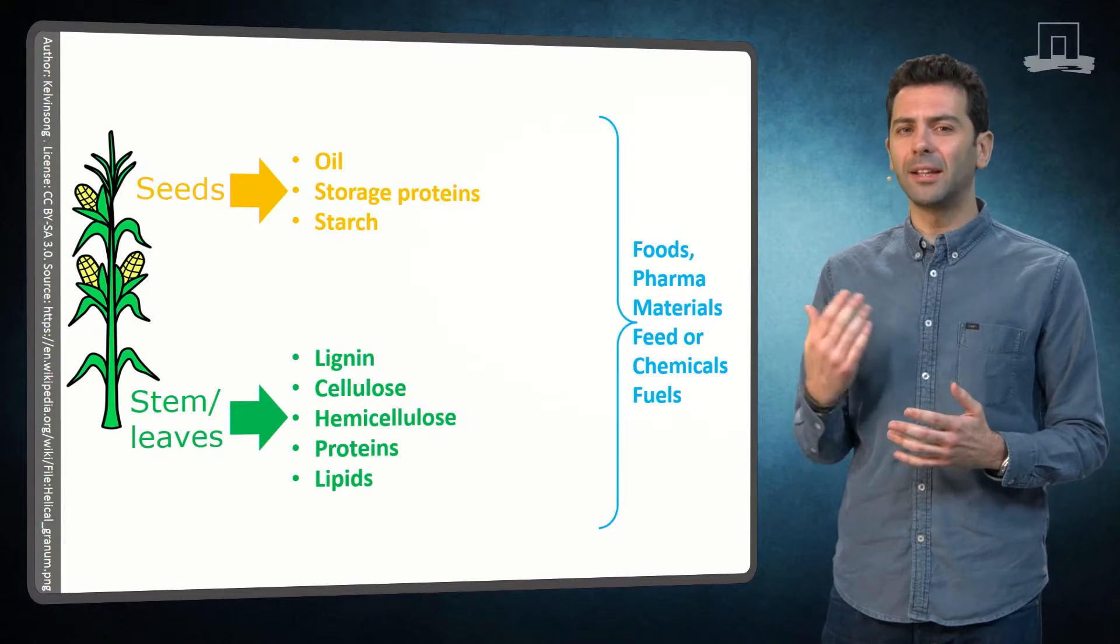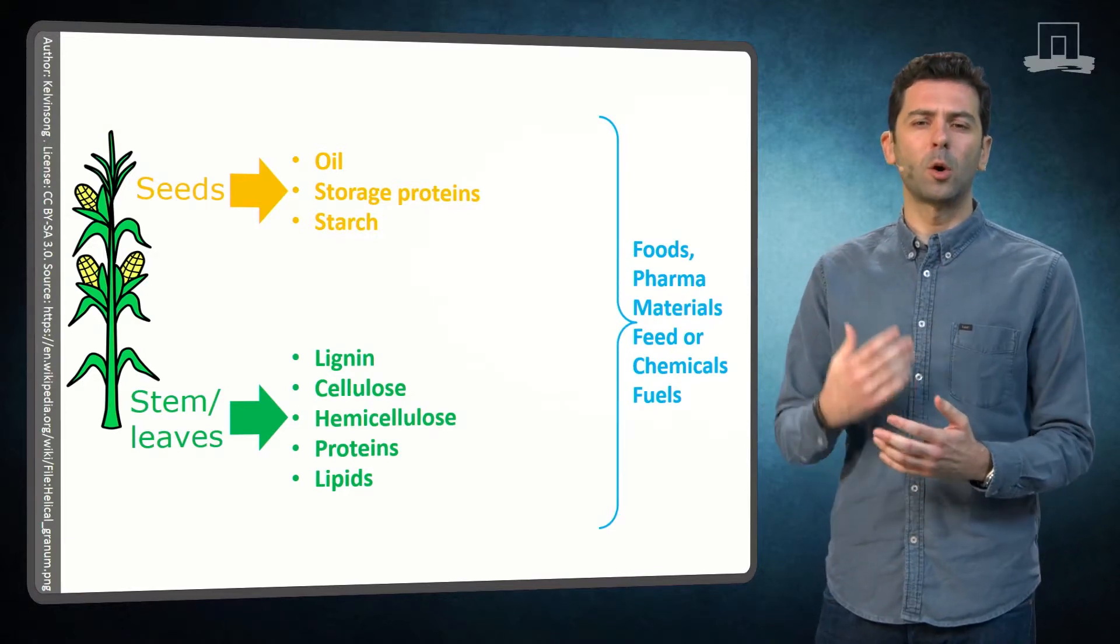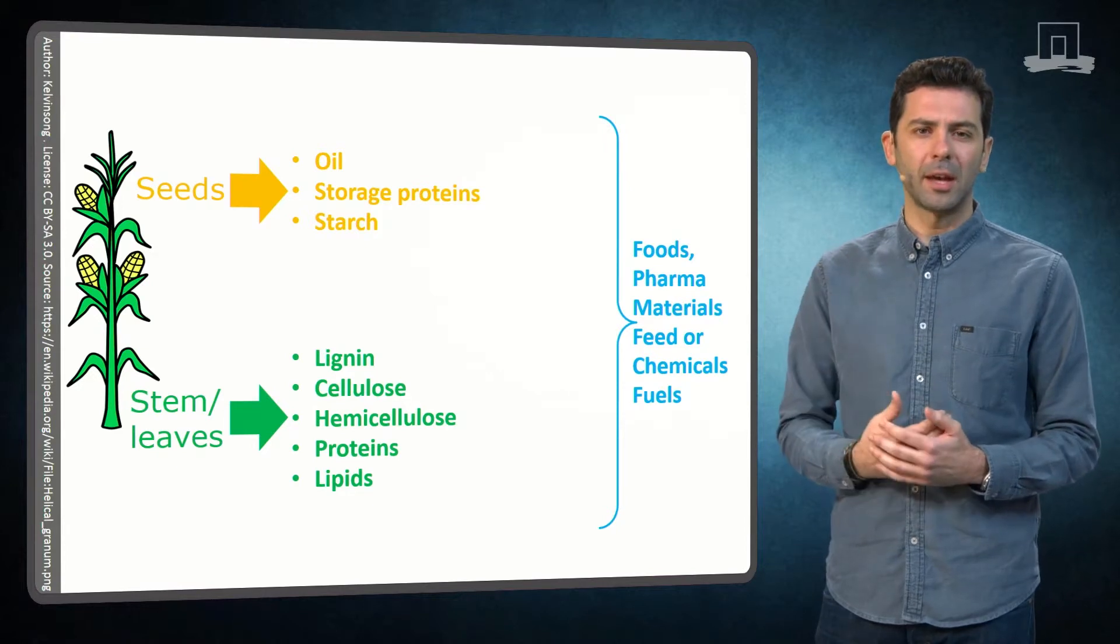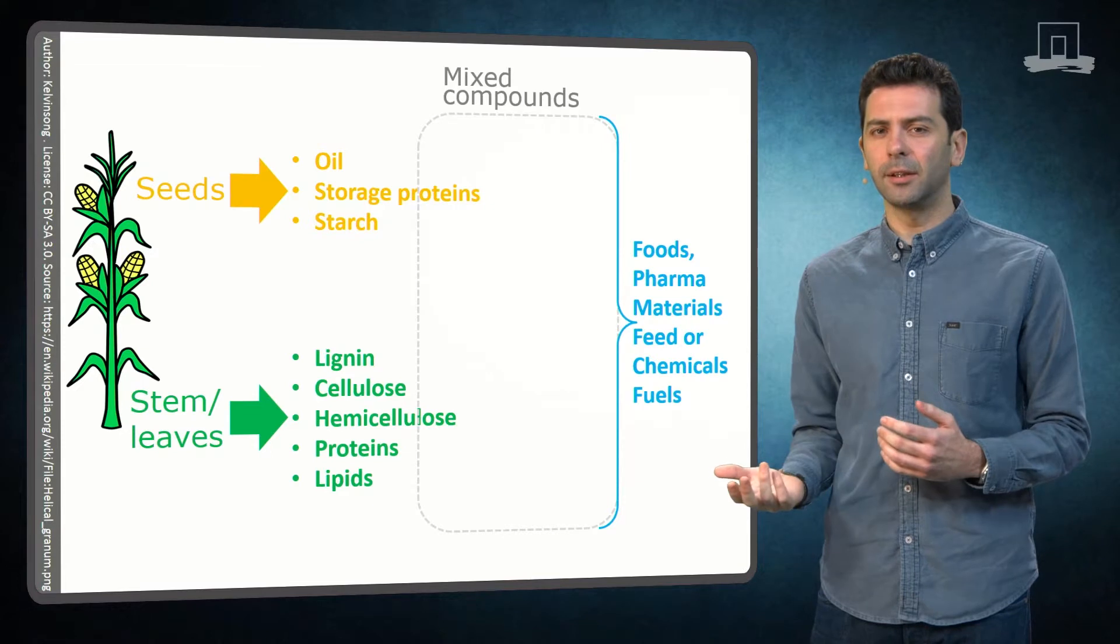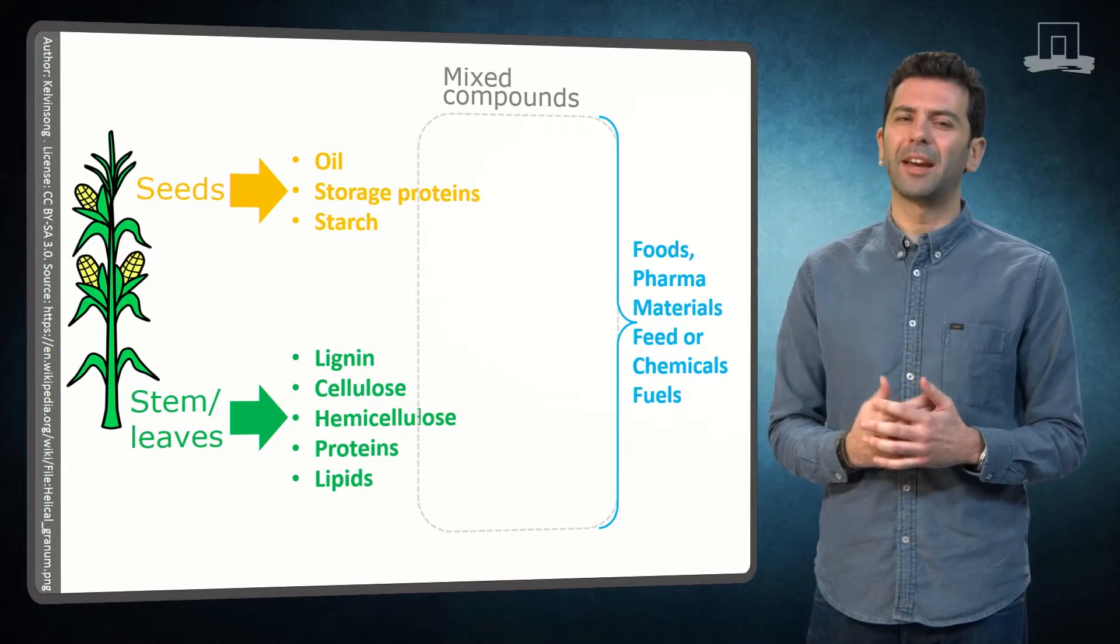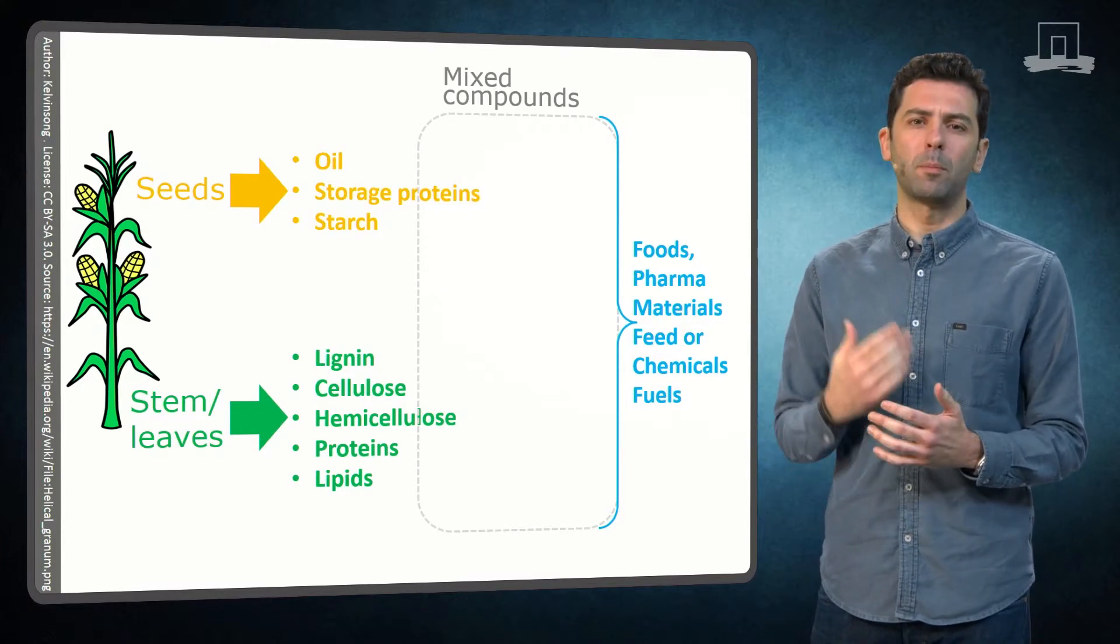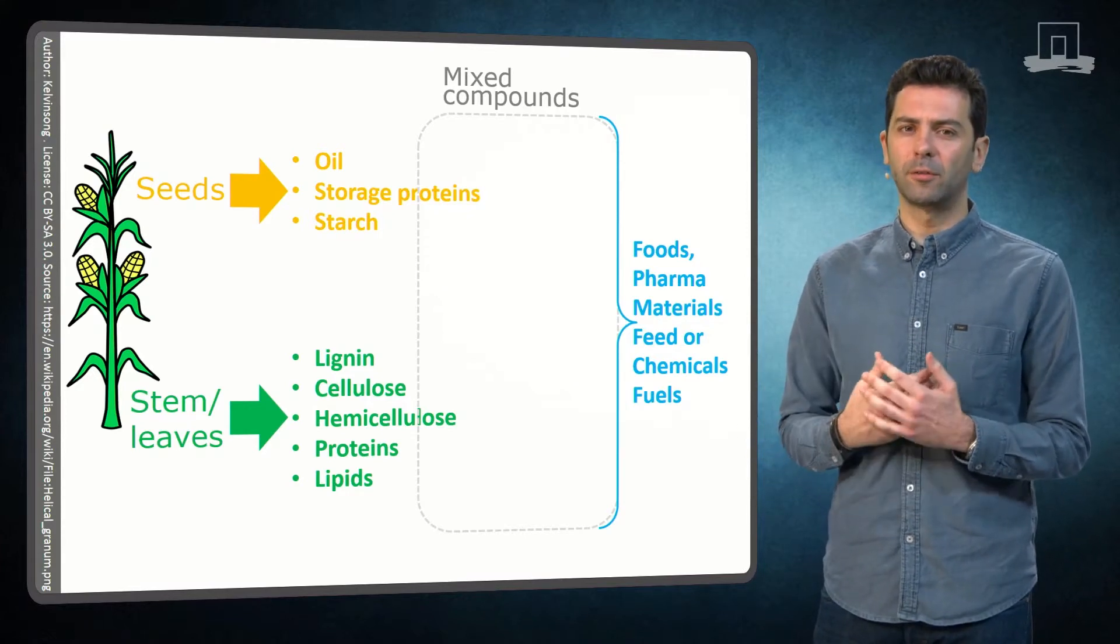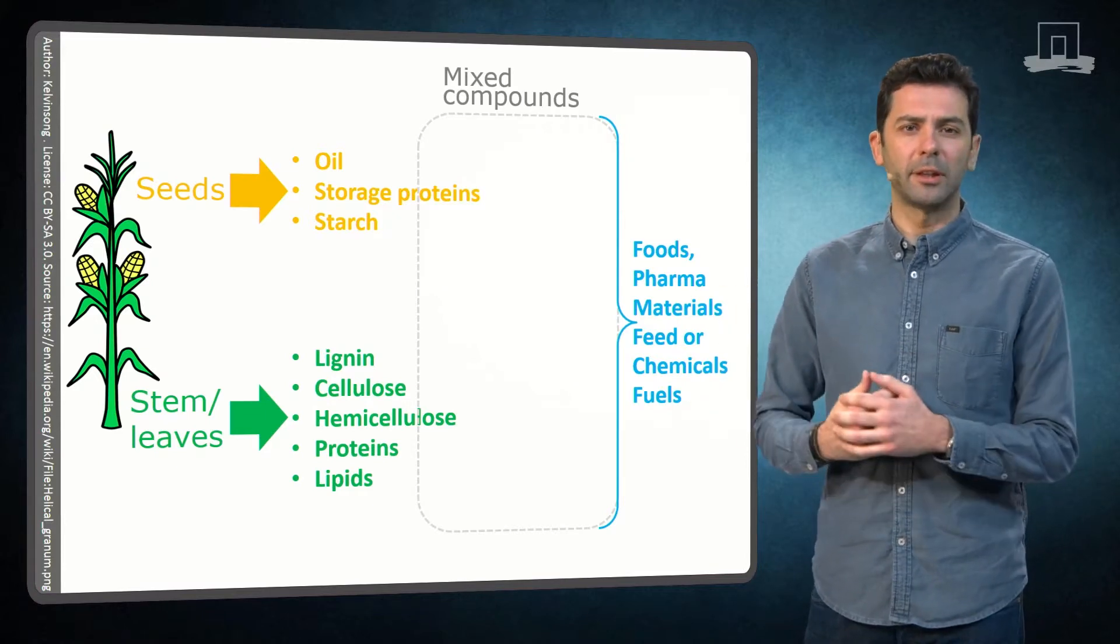So ideally, we should break down the whole plant with the least possible effort and exploit every single compound. Or even better, we should obtain each compound in such a state that will provide the best possible functionality for further use in foods, pharma, materials, feed or chemicals.